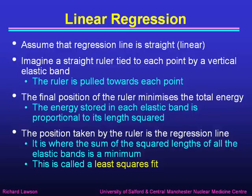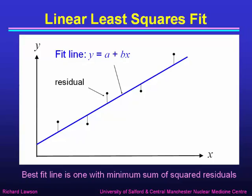One way of thinking about this is to imagine a straight ruler tied to each of our measurement points by a vertical elastic band. Imagine sticking a drawing pin at every point, attaching an elastic band to that point and to the ruler, and letting it pull the ruler to an equilibrium position. The final position of that ruler is the one that minimizes the total energy of all the elastic bands. The energy stored in a stretched elastic band is proportional to its length squared, so the final position of the ruler is the regression line — the position where the sum of all the squared lengths of all the elastic bands is a minimum. That's why we call this a least squares fit.